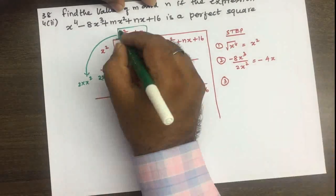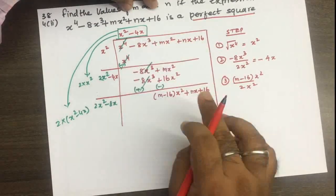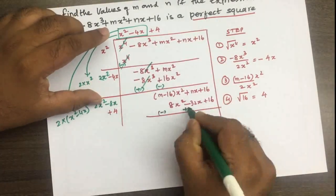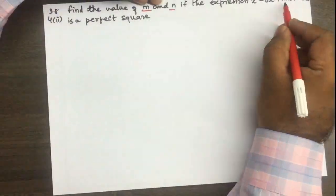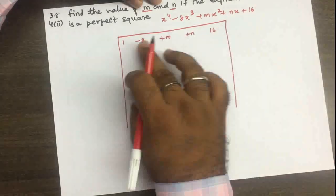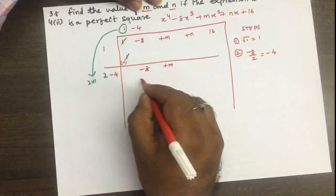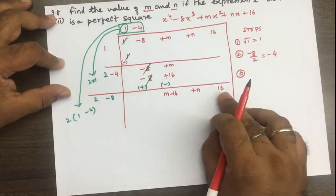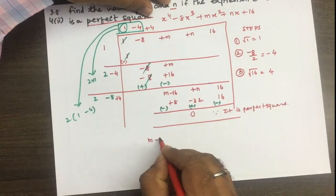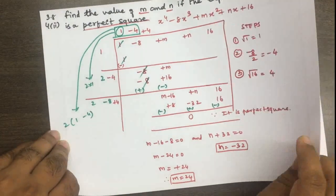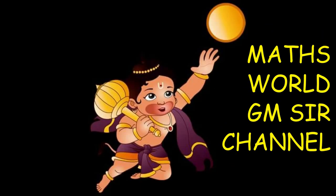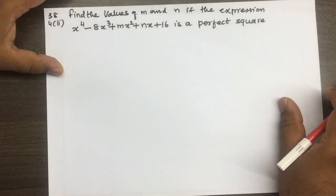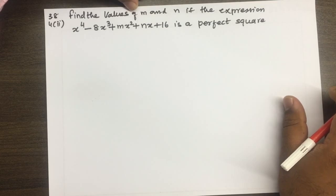Welcome to Maxwell's GM Sir Channel. You are learning finding the values of M and N. If the expression x power 4 minus 8x cube plus mx square plus nx plus 16 is a perfect square.